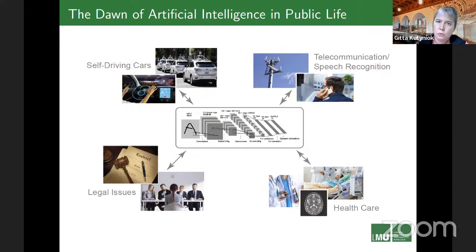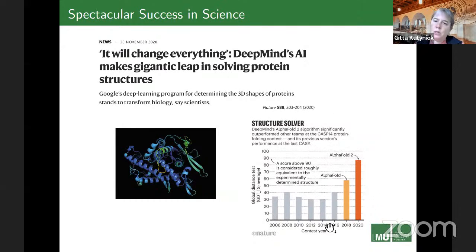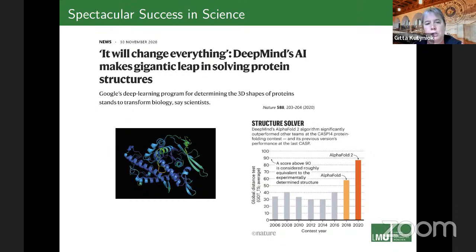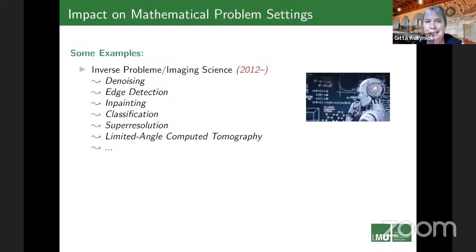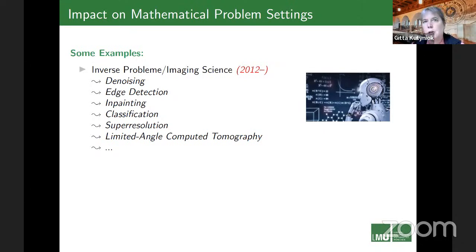Getting closer to sciences, we also see spectacular success. Here in the area of biology, concerning protein folding, new algorithms called AlphaFold make a gigantic leap forward in prediction quality. In mathematics itself, there is a tremendous impact — starting around 2012 with inverse problems and imaging sciences, many state-of-the-art algorithms quickly adopted these new methods for problems like denoising, edge detection, and inpainting.